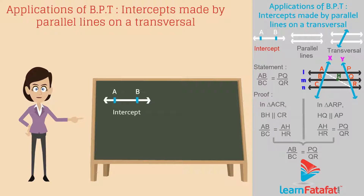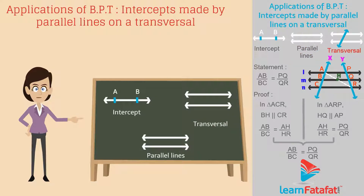Intercept means part of a line. Parallel lines are the lines which never cross each other. A transversal is a line that cuts two or more lines.